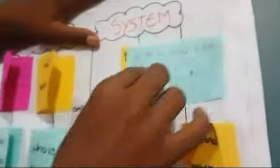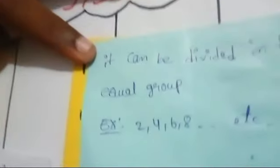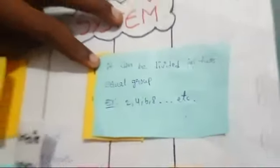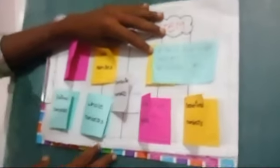Even numbers: Numbers that can be divided into equal groups. Example: 2, 4, 6, 8.